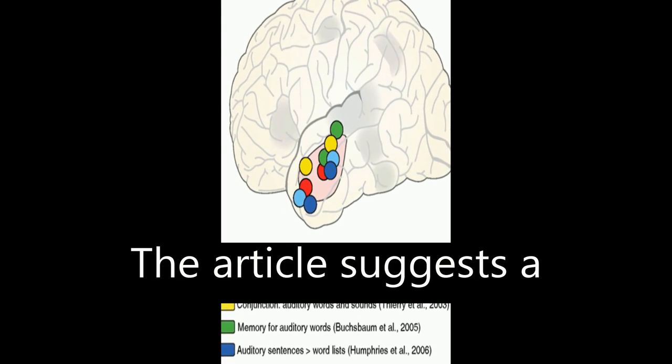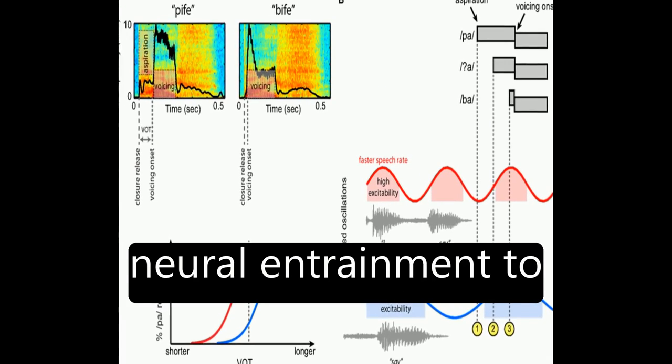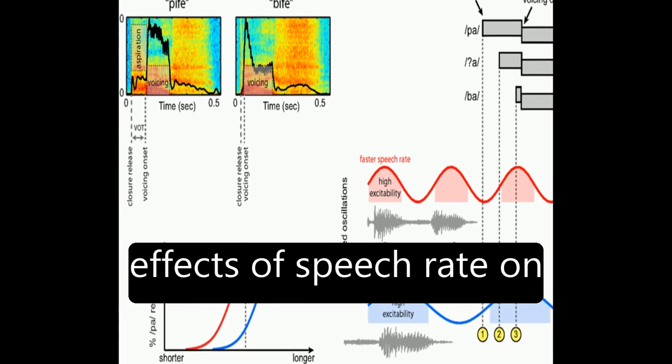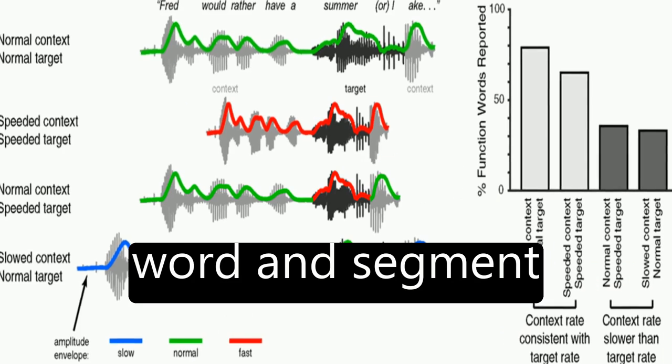The article suggests a framework through which neural entrainment to speech rhythm can explain effects of speech rate on word and segment perception.